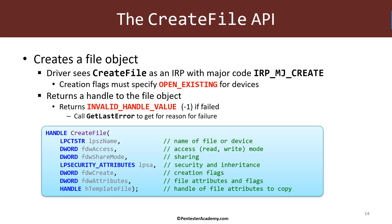Like all calls to CreateFile, on success we get back a proper handle. On failure, it returns INVALID_HANDLE_VALUE, which is minus one. We can then call GetLastError to get more information about why the call failed. The function is very general — for devices it's simpler to use than for files, because parameters like sharing mode, security attributes, and template file are not necessary in most cases.